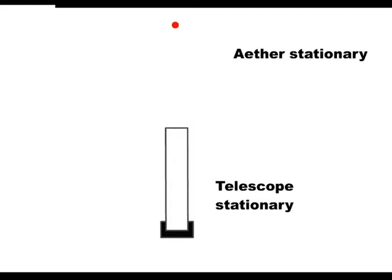If a telescope is pointing at a star and both are stationary, then obviously the light comes straight into the telescope.